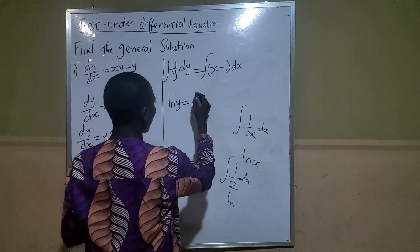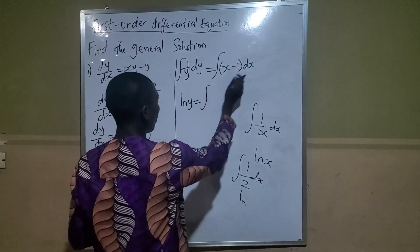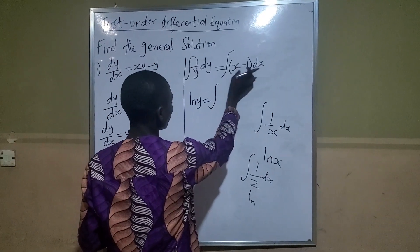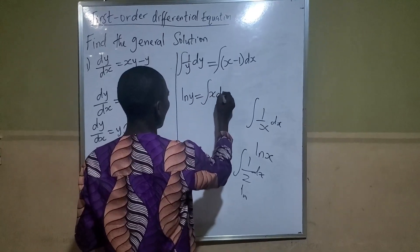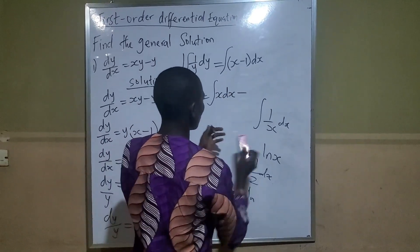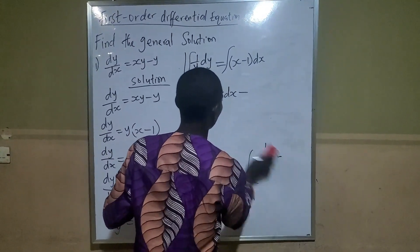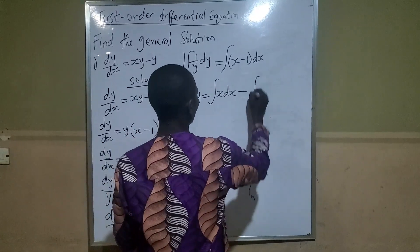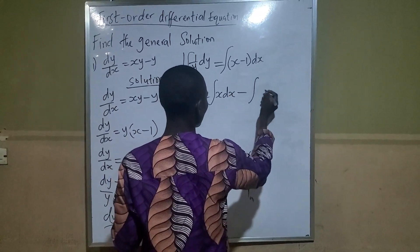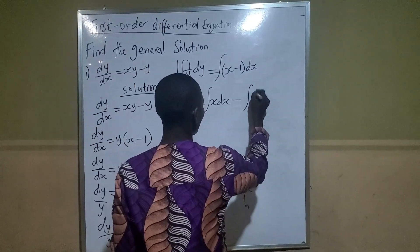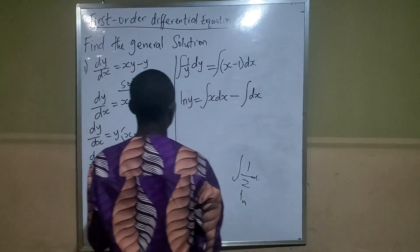Let's break this part further. We have (x - 1)dx. Multiplying to open the brackets, I have x times dx to give x dx minus 1 times dx, which gives dx. So here I have ln|y| equals integral of x dx minus integral of dx.